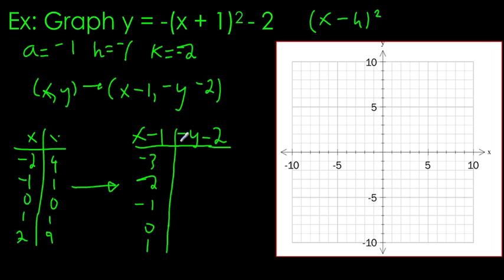And then I'll put my values in. Negative times 4, so negative 4 minus 2 is negative 6. Negative 1 subtract 2 is negative 3. 0 subtract 2, that's negative 2. And then it repeats.